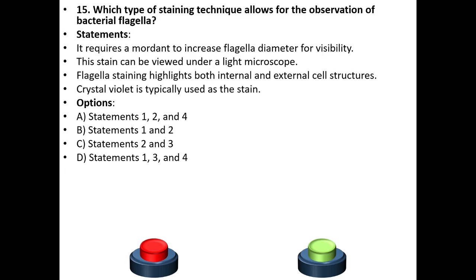Fifteenth question. Which type of staining technique allows for the observation of bacterial flagella? Statements: It requires a mordant to increase flagella diameter for visibility. This stain can be viewed under a light microscope. Flagella staining highlights both internal and external cell structures. Crystal violet is typically used as the stain.